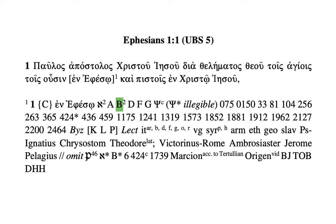D, F, and G are straightforward majuscules, just like Aleph and B, but these don't imply any corrections. Then you get C with a raised letter C. The Greek letter C represents a majuscule in the same way other symbols do — you can have a Latin letter like B or D, a Greek letter like C, or a number like 075, all representing majuscules.